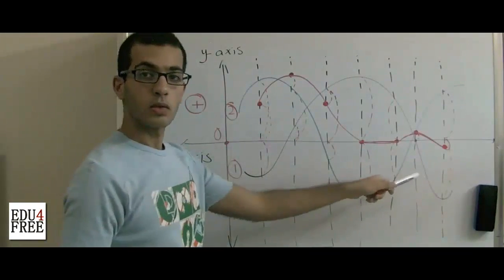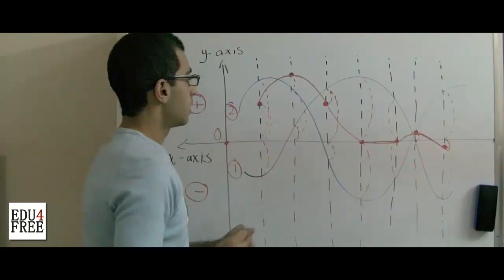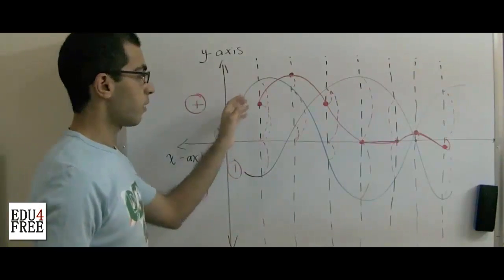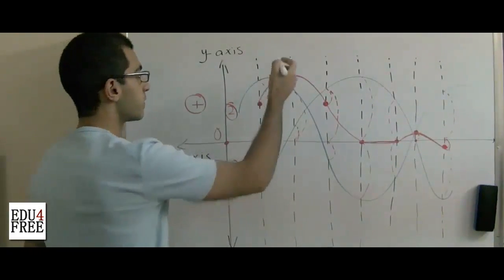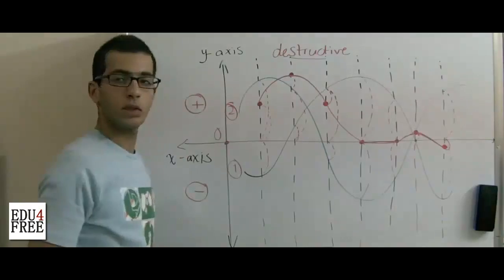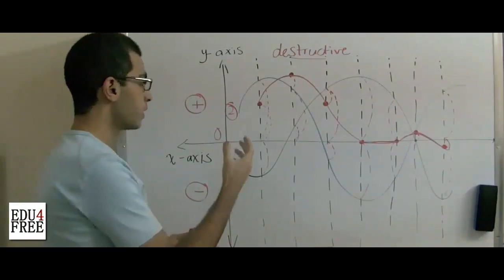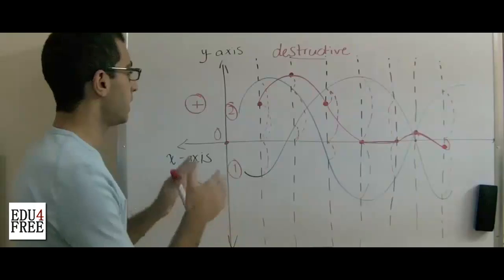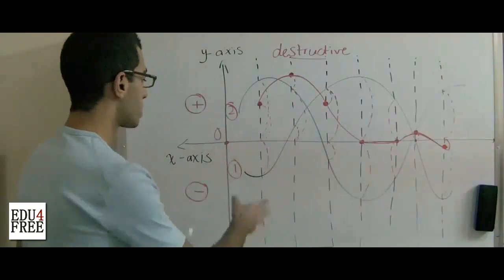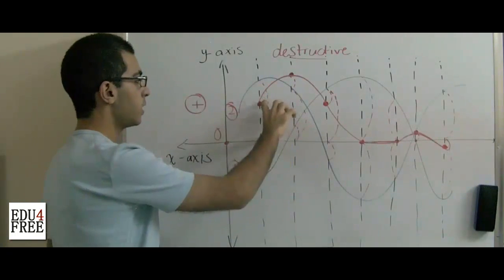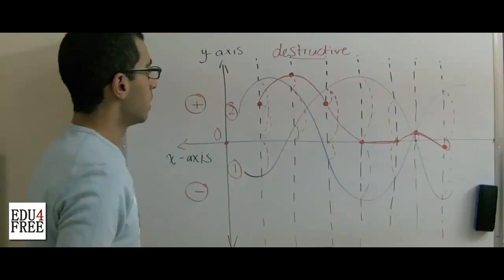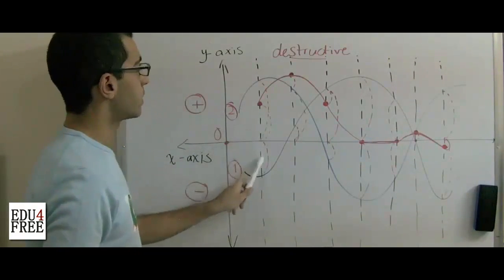So when we subtract a wave from another, this is called destructive interference. Why is it called destructive? Because it reduces the strength of the wave. It's called destructive when we subtract a wave from another while drawing a point to get the resultant wave. This is an example of destructive interference.